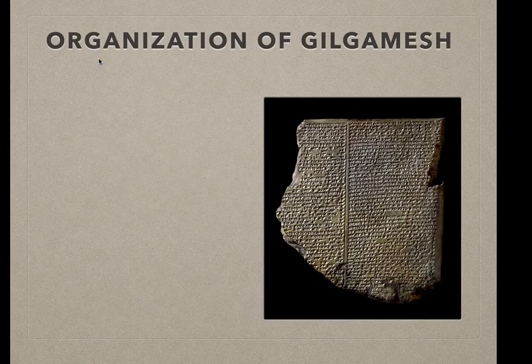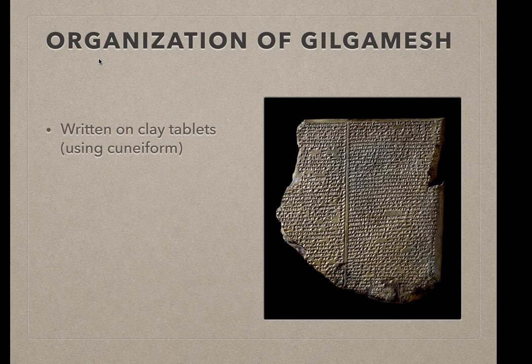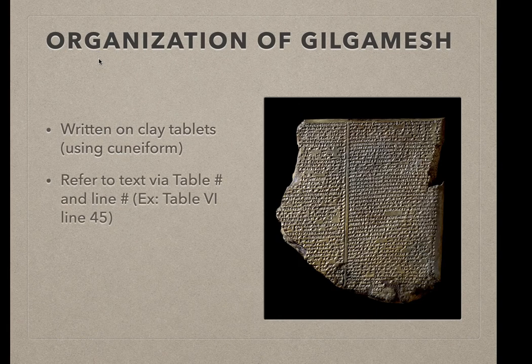A word about how Gilgamesh is organized. Because it was written in cuneiform, which is done on clay tablets, it is divided into tablets that have line numbers. The line numbering starts over again once you get to a new tablet. Read the directions in the discussion post explanation carefully so that you can cite quotes in the right way.